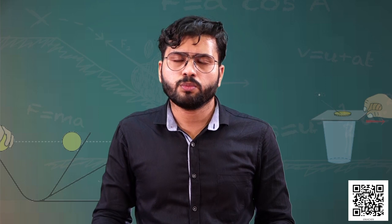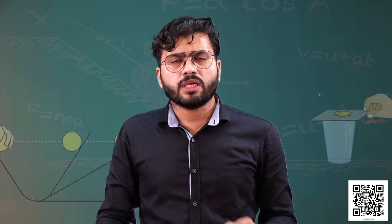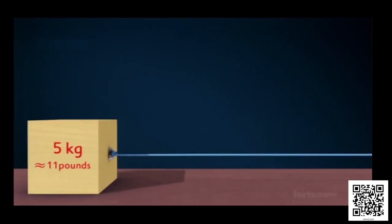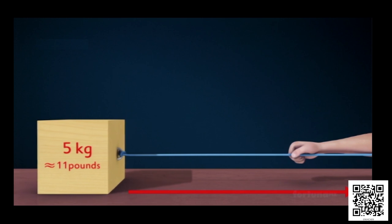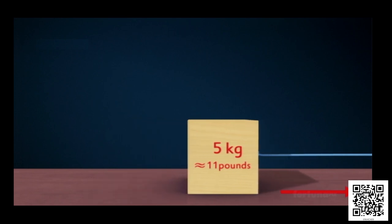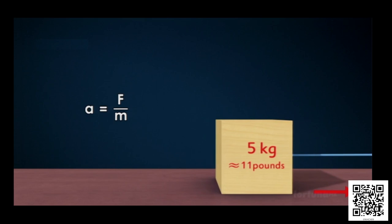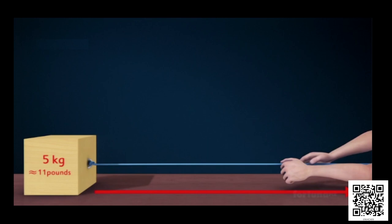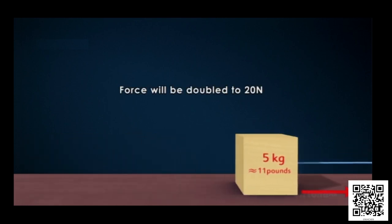To understand the second law of motion, consider a wooden block weighing 5 kg. If we tie a rope around the block and pull it across a table with a force of 10 N, the block will accelerate in the direction of the force. Using the equation a = F/m, the acceleration in this case would be 2 m/s².